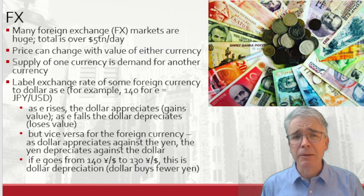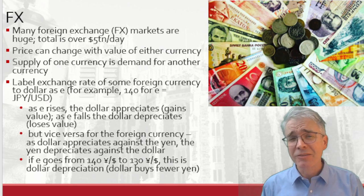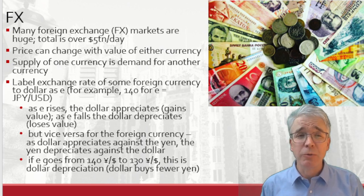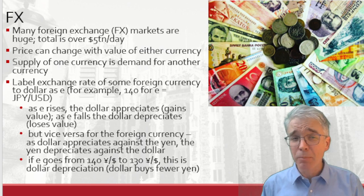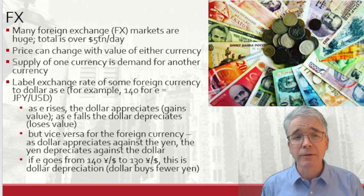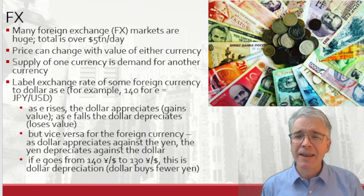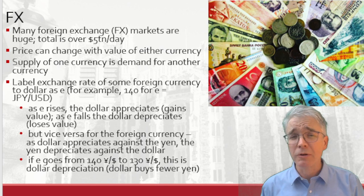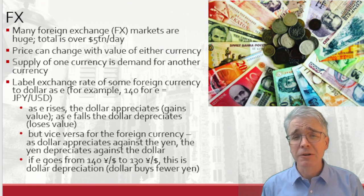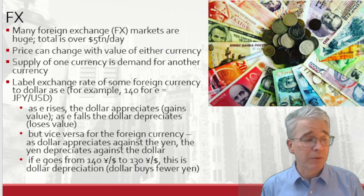They move in opposite directions — one gets stronger, the other gets weaker. It's a zero-sum game. If e goes from 140 to 130, that's dollar depreciation because the dollar is buying fewer yen, or equivalently the yen is appreciating because it takes fewer yen to buy one dollar. That's always confusing, which is why we keep the definition of e fixed as units of foreign currency per dollar. Students sometimes wonder whether it matters that some currencies have hundreds of units to the dollar and others have less than one — it doesn't make any difference.